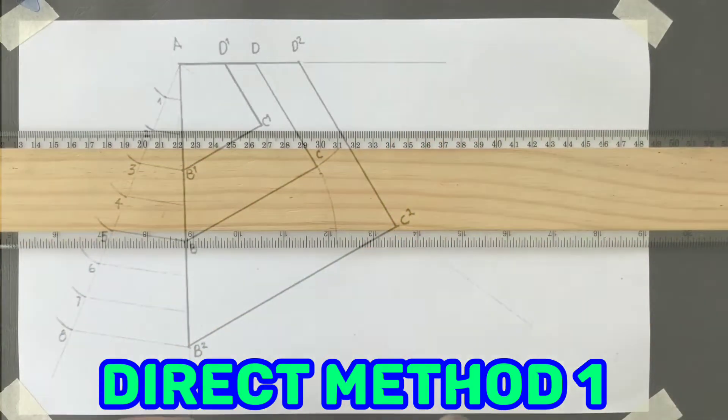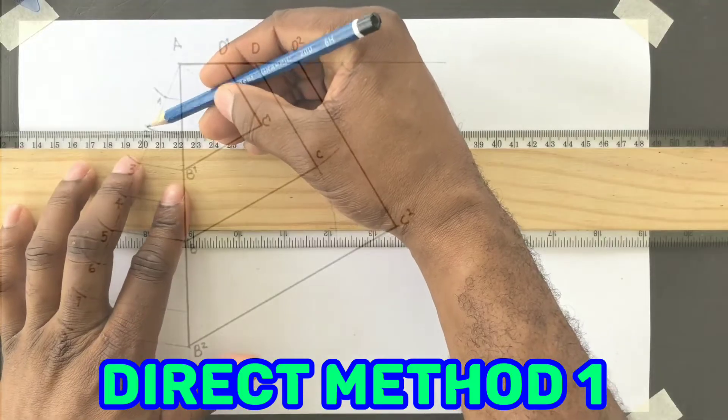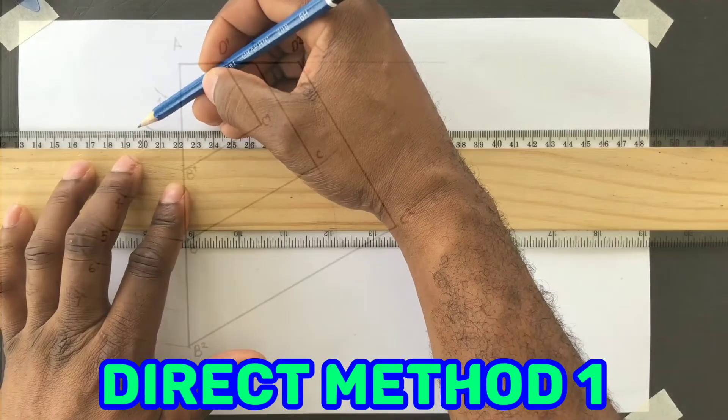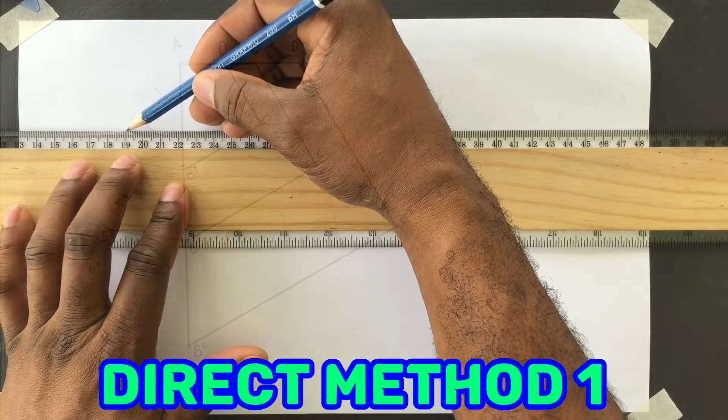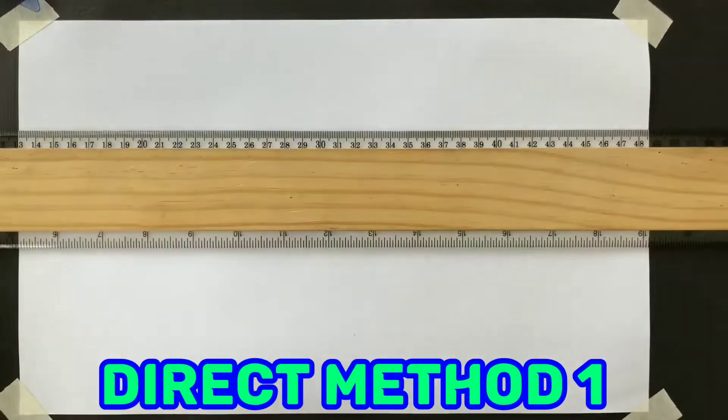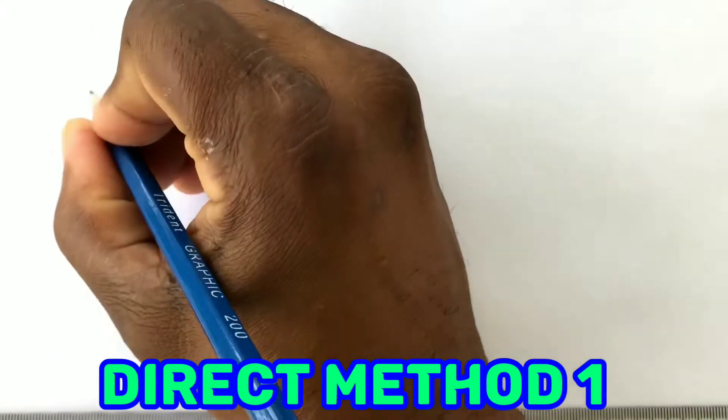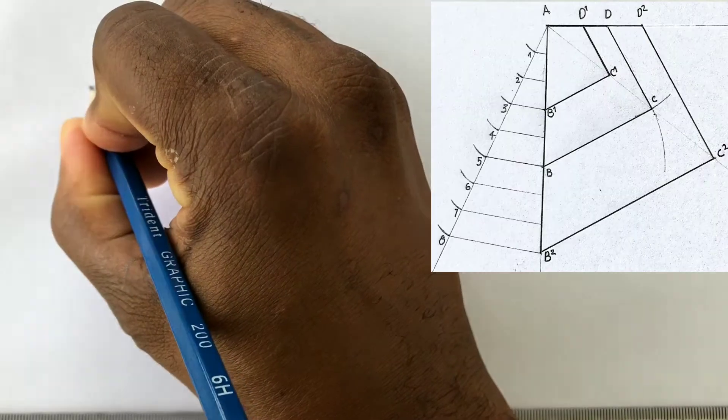Firstly, use your T-square and draw a horizontal construction line. Identify a point on your line and label this point A.